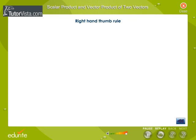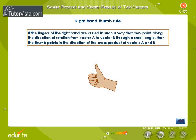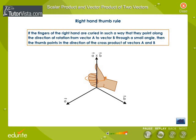Right-hand thumb rule: If the fingers of the right hand are curled in such a way that they point along the direction of rotation from vector A to vector B through a small angle, then the thumb points in the direction of the cross product of vectors A and B. Note that the cross product of two vectors does not obey the commutative law.